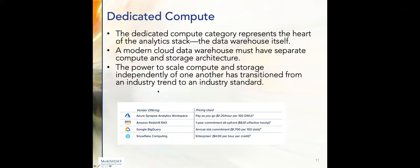The dedicated compute category represents the heart of the analytics stack — the data warehouse itself. A lot of times when people talk about the warehouse, this is what they mean. All the vendors — AWS, Azure, Google, Snowflake, IBM, Oracle, and others — have pricing along similar lines. They're all doing enterprise agreements, but not every enterprise is at the level where that makes sense for every vendor. Even though it's pay-as-you-go, they all like bigger commitments. You can proof-of-concept on a pay-by-the-hour rate, but eventually you might want to explore enterprise pricing options.